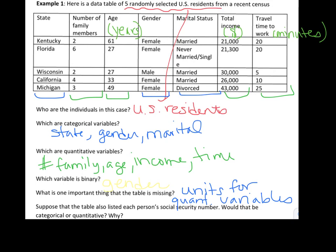The last question I added: suppose the table also listed each person's social security number — would that be quantitative or categorical? Hopefully you would say categorical. The reason is that if you were to take the average of a bunch of people's social security numbers, it would not give you anything meaningful. So the reason is that it doesn't give a meaningful average.